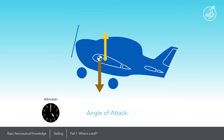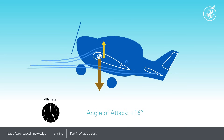A stall occurs once the critical angle of attack is exceeded. The airflow on top of the wing breaks away, drag increases, and the lift force significantly reduces, no longer able to support the aeroplane's weight, which results in loss of altitude.